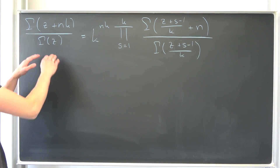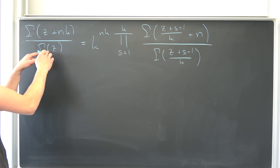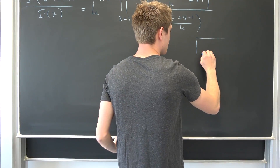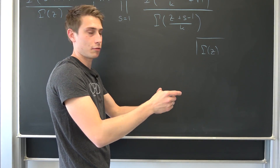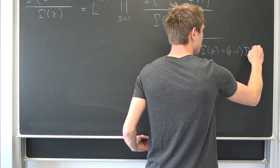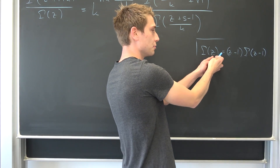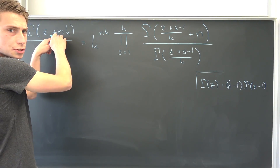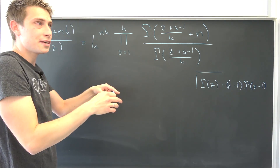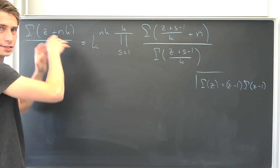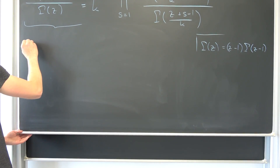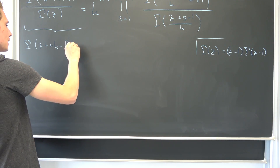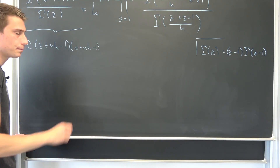I want you to consider the recursive definition of the gamma function right here. So you see it would be cool to cancel out the gamma of z down here — how can we get a gamma of z up here? Well, if you remember correctly, we can express gamma of z, which is nothing but z minus 1 factorial, as nothing but z minus 1 times gamma of z minus 1. So what we do: we reduce the argument by 1, plug it in here, and multiply it by the gamma function of this reduced argument. This first iteration is going to leave us with gamma of z plus n times k minus 1, times z plus n times k minus 1, over gamma of z.